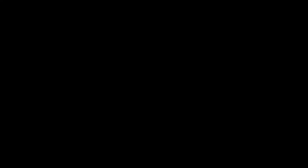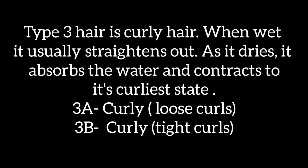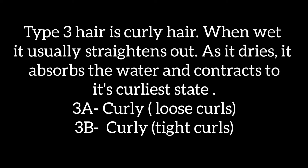Type 3 hair is very curly hair. It has a well-defined coil pattern — when it is wet it appears pretty straight, but as it dries out it goes back to its coiled state. This hair has a very springy appearance and it tends to frizz a lot.